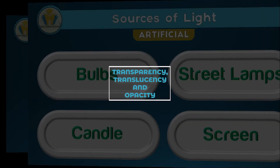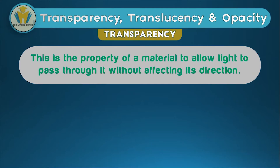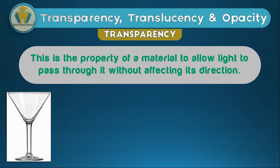Now let's take a look at transparency, translucency, and opacity. Transparency is the property of a material to allow light to pass through it without affecting its direction. An object that possesses transparency is called a transparent object, meaning you can see through transparent objects. For example, in this picture we've got a glass cup — a wine glass — and you're able to see through such an object. This property of not affecting the light rays that pass through it is what we term as transparency.